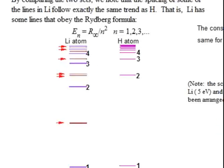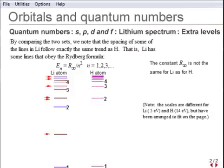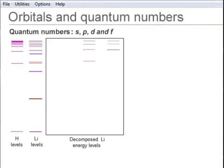Some of the levels for hydrogen atoms and lithium atoms are the same, but where do these other levels come from for lithium? If we decompose the lithium energy levels as shown, then the origin of various emission spectral lines becomes clearer.